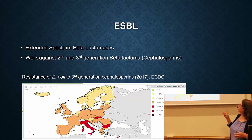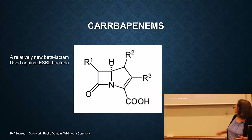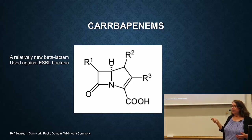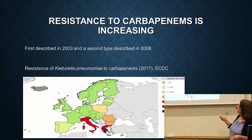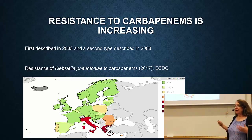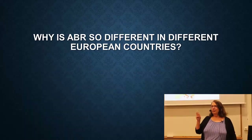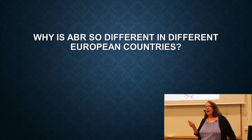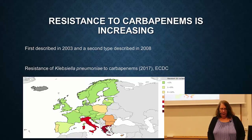Once you get to cephalosporins, there are now further generations of beta-lactams, specifically one called carbapenem, where you can again see the square ring. This is a relatively new antibiotic used if you have an ESBL bacterial infection. And already, resistance is terrible in southern Europe — in Italy and Greece in particular — whereas in Sweden it is not so bad. So these infections could be resistant to everything. You will hear much more when we get to politics and things like that. So that is reality, unfortunately.